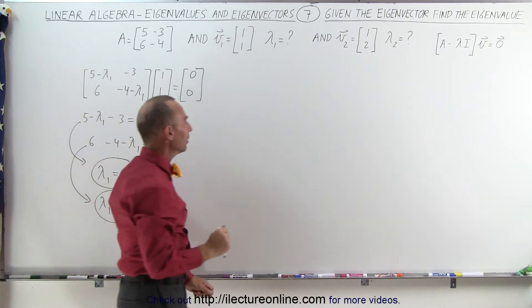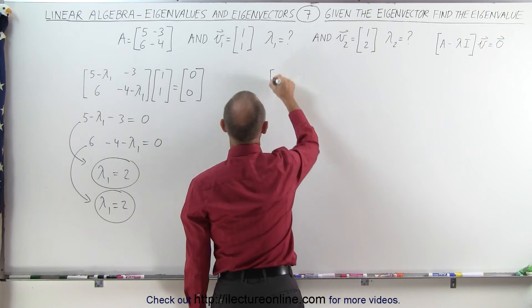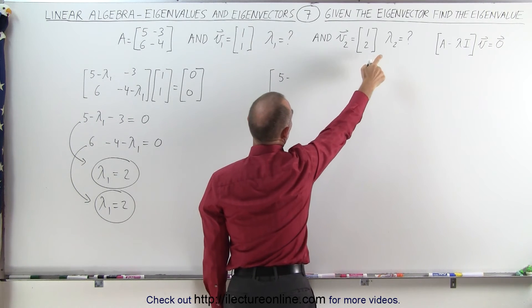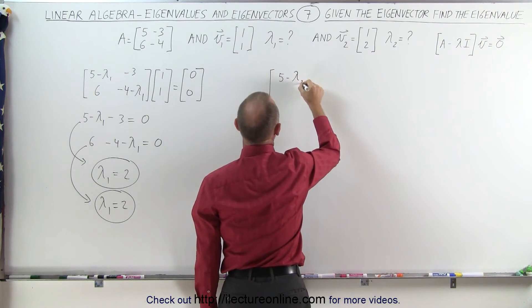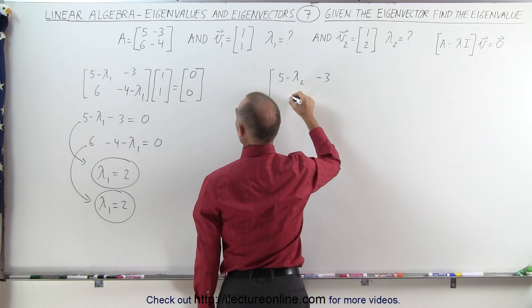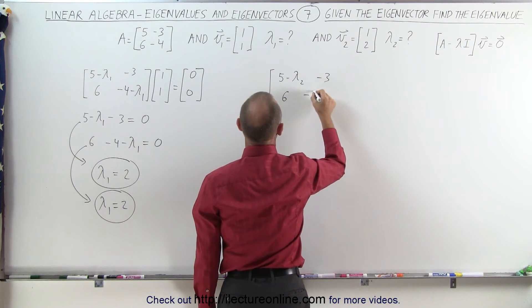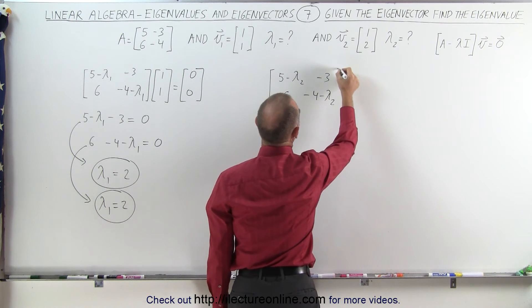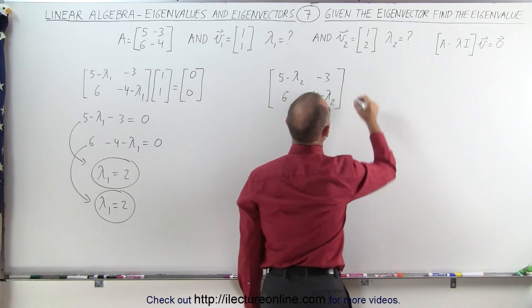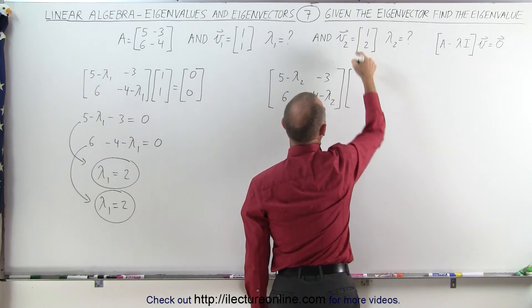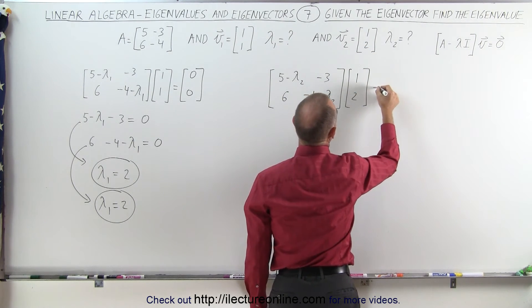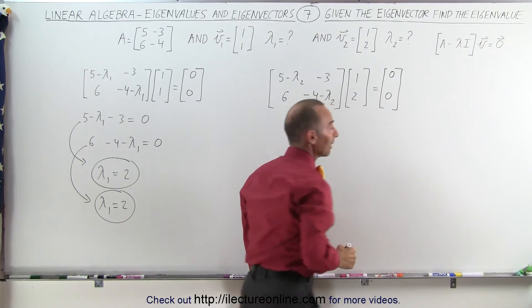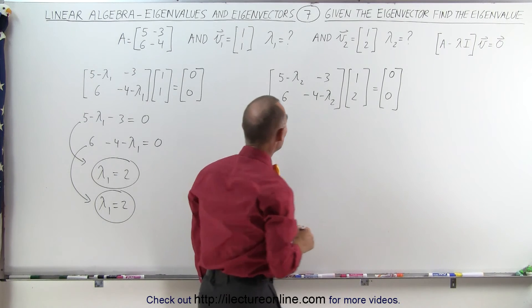Let's find the second eigenvalue. Again we take the matrix [5-λ₂, 6; -3, -4-λ₂], because we're now finding the second eigenvalue λ₂. We multiply that times our second eigenvector [1, 2], and that should equal the null vector [0, 0]. Alright, let's find what λ₂ is equal to.